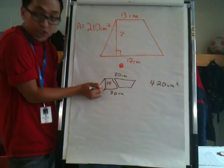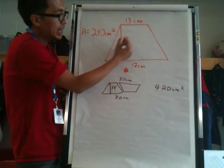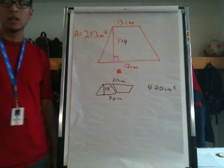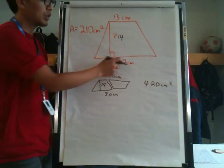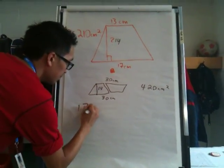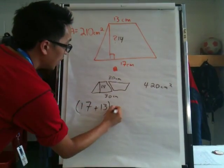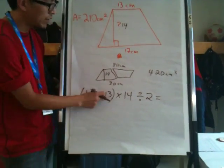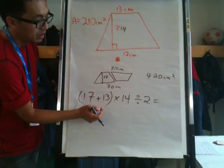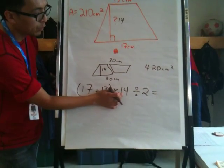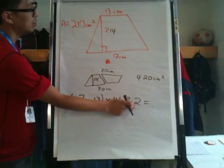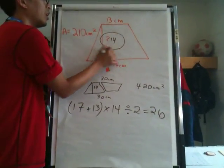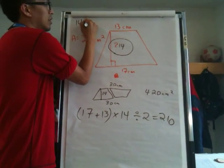Which means because the height did not change here, this height is the same thing as well. Now let's test it out using the formula that Zinedine brought up before, which was 17 plus 13, times the height which is 14, divided by 2. So 17 plus 13 is 30, times 14 is 420, divided by 2 is 210. Therefore, the height that we did not know is 14 centimeters.